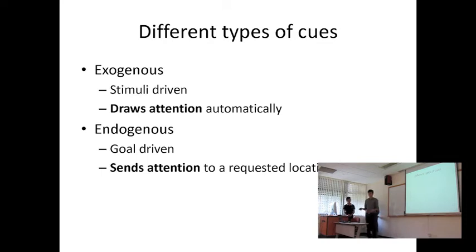So this cueing experiment also allows us to explore the two different types of attention, namely exogenous and endogenous attention, by introducing two types of cues. The first type of attention, exogenous attention, as the name suggests, is driven by external factors, more specifically external stimuli. So exogenous cues are cues which draw attention automatically in a less controlled fashion. On the other hand, we have endogenous attention, where it's more driven and determined by internal instructions. And so endogenous cues are cues which set attention to a specific location in a more controlled manner.